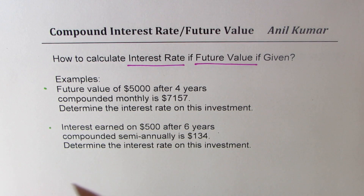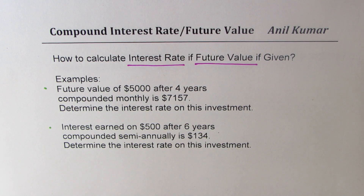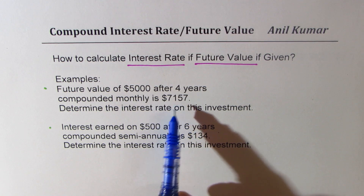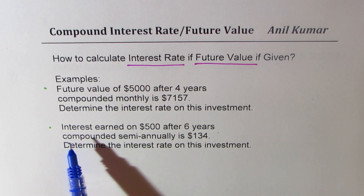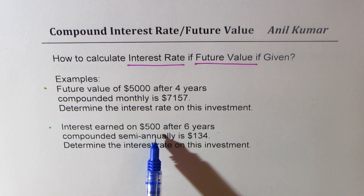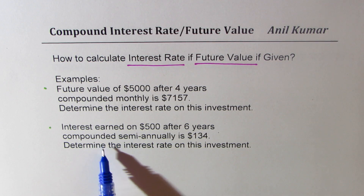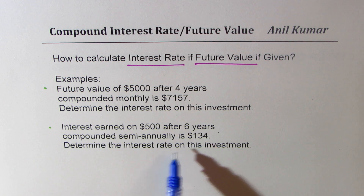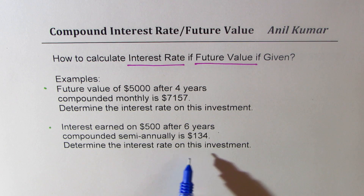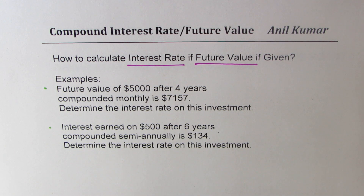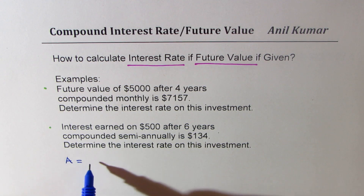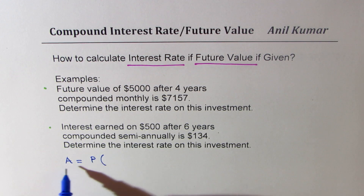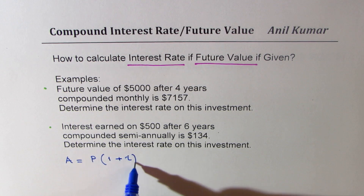The two examples here are: first, future value of $5,000 after four years compounded monthly is $7,157 — determine the interest rate on this investment. The second question is similar: interest earned on $500 after six years compounded semi-annually is $134 — determine the interest rate on this investment. The future value, or amount A, is related to present value P as: A equals P times (1 plus i) to the power of n.